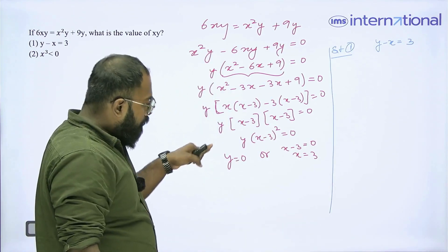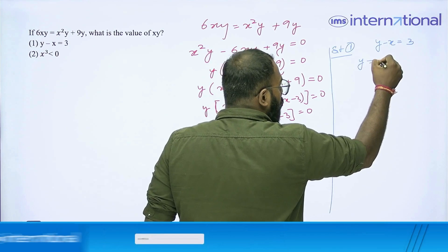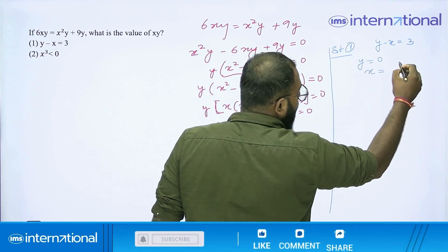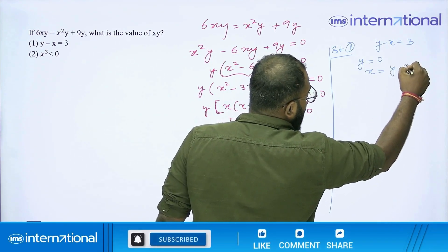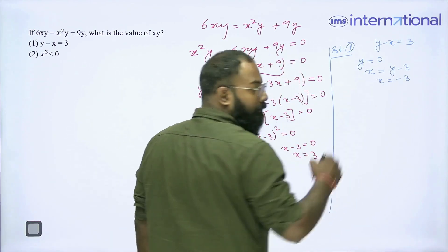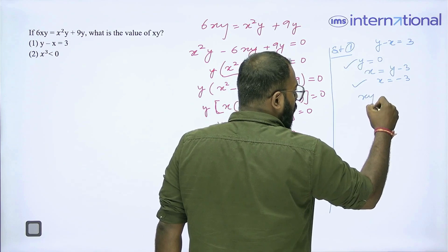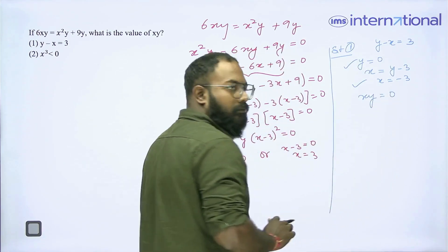Now let us say I am just using y = 0. So, if y = 0, what is x? x is y - 3, that is 0 - 3, that is -3. Now, y is 0, x is -3, what is xy? xy is 0, clear?